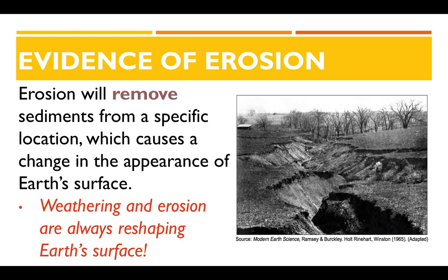The process of erosion can leave a lot of evidence behind. Since erosion removes sediments from one place to another, a location that experienced erosion may show lots of holes or gaps in the land. In this picture you can see lots of cracks in the rocks and missing pieces of land because erosion has removed that material to another location. That's what we call reshaping the surface of the earth — it's constantly changing because of erosion.